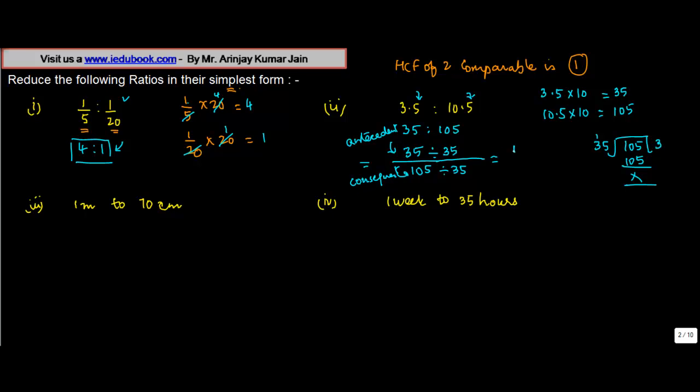So 35 divided by 35 gives you 1, 105 divided by 35 gives you 3, so 1 upon 3 or 1 is to 3. Again, as I said, given that one of the ratios is 1, it cannot be reduced any further.